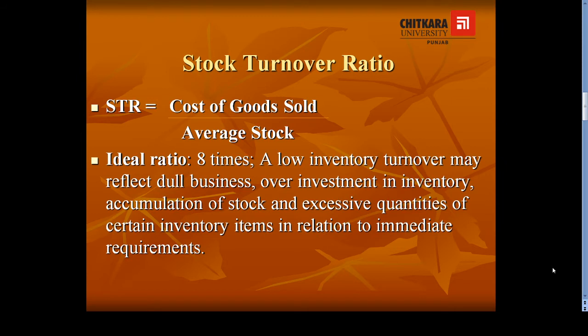Now the question is how to calculate cost of goods sold. Cost of goods sold will be calculated by applying a formula which is: opening stock plus purchases plus direct expenses minus closing stock. These all items are available in the trading account of an organization. So with the help of the trading account we will calculate cost of goods sold.